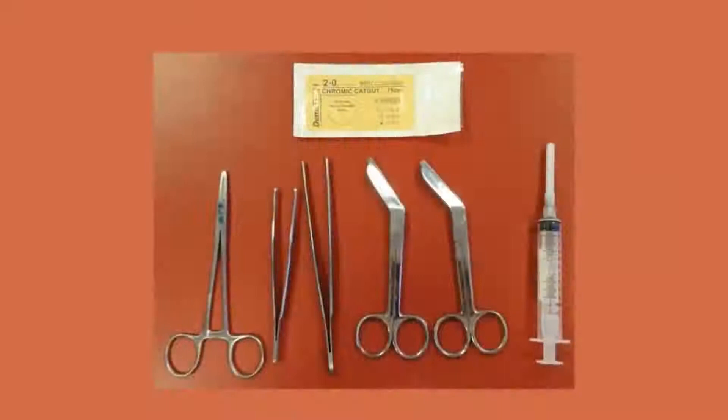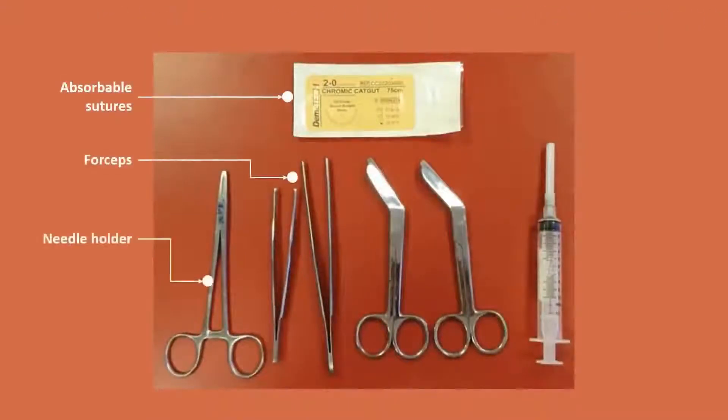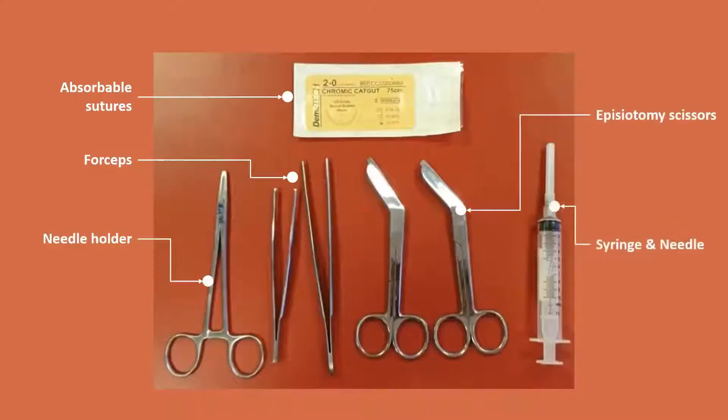These are the instruments needed for episiotomy: absorbable sutures, forceps, needle holder, episiotomy scissors, syringe and needle with 1% lignocaine.